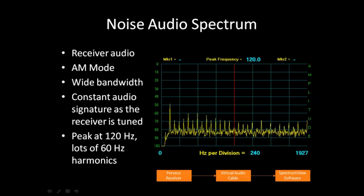The audio noise spectrum — you can very easily hook your receiver audio in AM mode and take a look at an FFT or Fourier analysis of the audio. Here you can see those spikes I was telling you about. This is very reminiscent of power line noise. Whenever you see 120 Hz and 60 Hz harmonics, you can pretty well decide this has got something to do with a power supply or your power line.